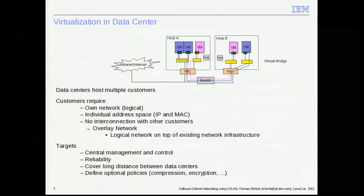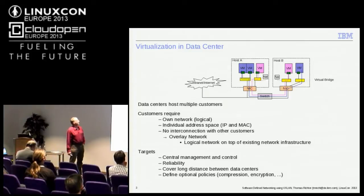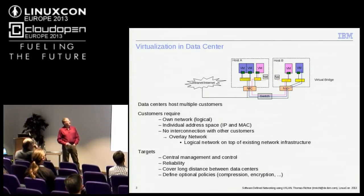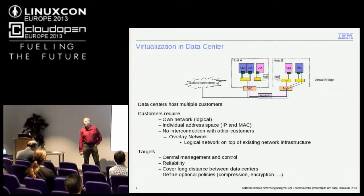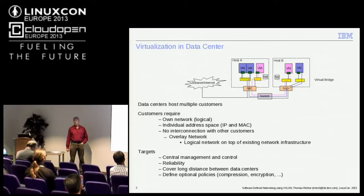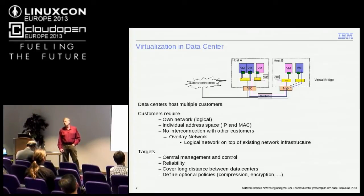So where are we right now? Data center virtualization. We have a few hosts, A and B for example, and customers run virtual machines on them. Big data centers have a lot of customers, separated using virtual machines shown in different colors. What customers really want is a network that belongs to themselves. They share an underlying network right now, but what they really want is their own logical network. This logical network can have individual address spaces for IP and MAC addresses — each customer might have the same MAC addresses as a different customer. Of course, there should be no interconnections with other customers, so the logical network should belong to me.